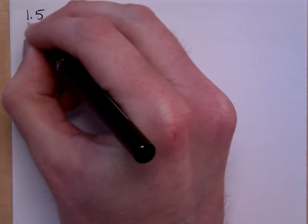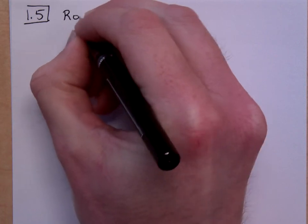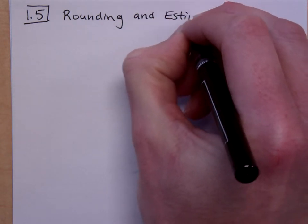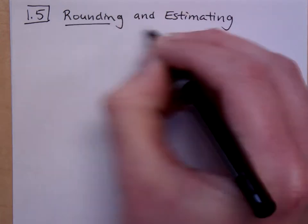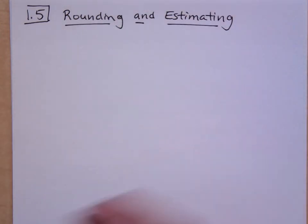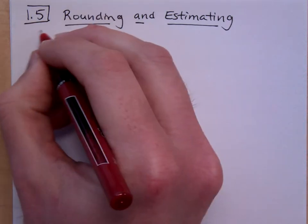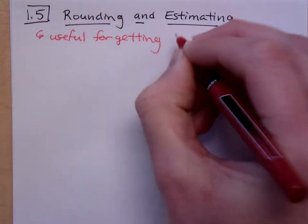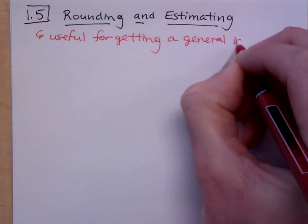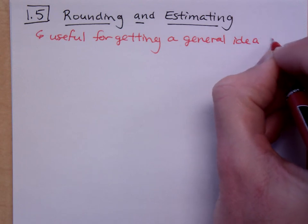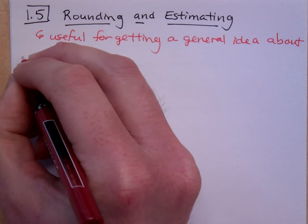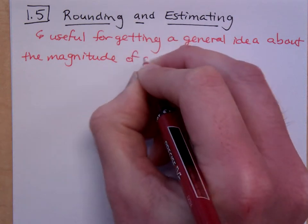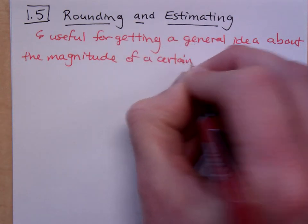Let's look at section 1.5. In this section, we're talking about things that we do all the time — it's called rounding and estimating. The thing about rounding and estimating, and you need to understand why we use this, is that it's useful for getting a general idea about the magnitude of a certain number or a quantity.